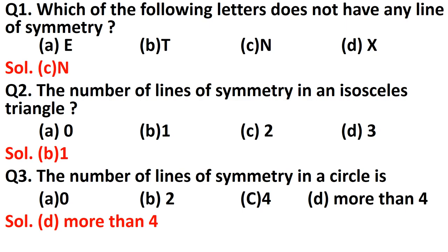Question number one: which of the following letters does not have any line of symmetry? The solution is option C, that is N. Option C is correct because E has one line of symmetry, T also has one line of symmetry, X has two lines of symmetry — only N does not have any line of symmetry.